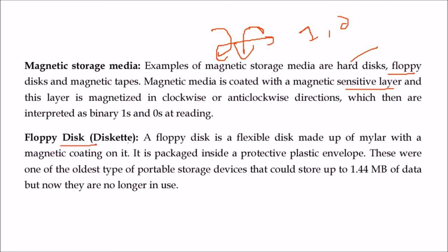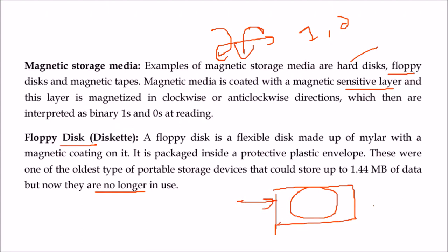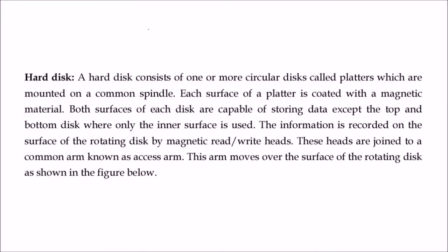The floppy disk is no longer in use. It was made of mylar with a magnetic coating and a protective plastic envelope — one of the oldest types of portable storage devices. It could hold just 1.44 MB of data. Today even an MP3 song is 3 to 4 MB, but people used to accomplish their purposes with floppy disks.